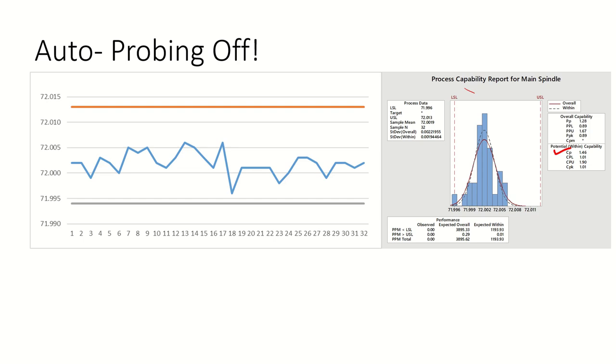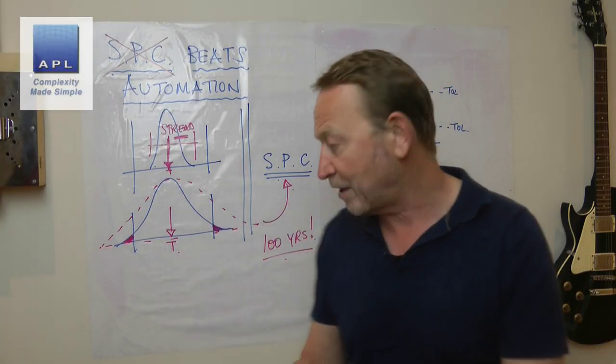If you just centered that distribution, one or two simple manual adjustments could get you to zero defects. Automation is driving you to the knacker's yard, driving your defect rate up. And there's the results that prove it. Switch the probing off if we can.